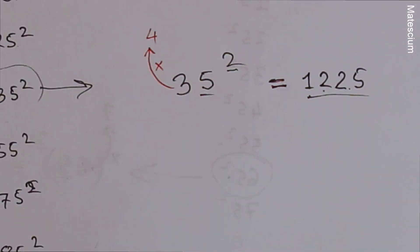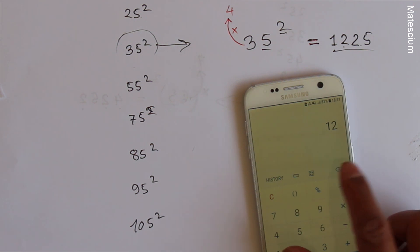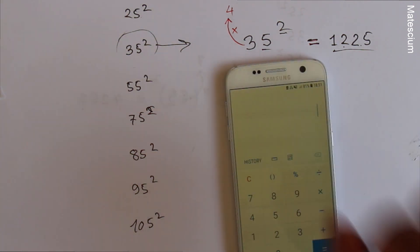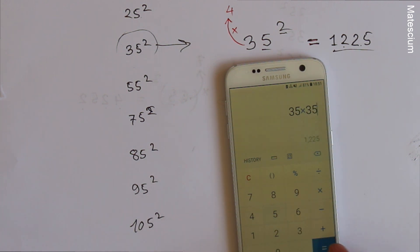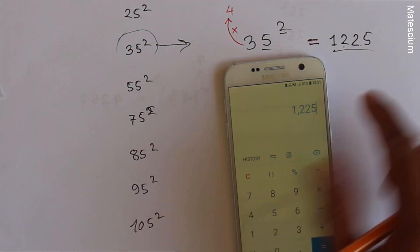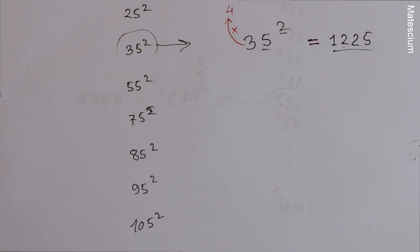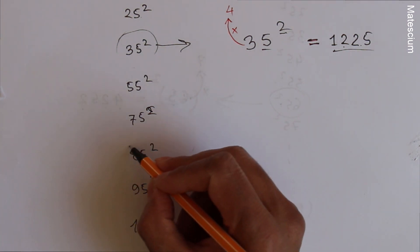If I use the calculator then you can see 35² means 35 times 35 which is 1225, exactly same value. Well let us consider again another number.